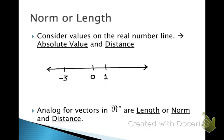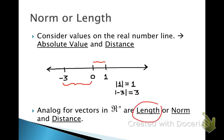For a moment, let's consider the real number line. If we talk about the absolute value of a number — say the value 1 — the absolute value simply means take whatever value is inside the absolute value notation and make it positive, giving us 1. Likewise, the absolute value of negative 3 gives us 3. Geometrically, that gives us the distance of those values from 0. This is also true when we talk about vectors, or the length of vectors in R^n.